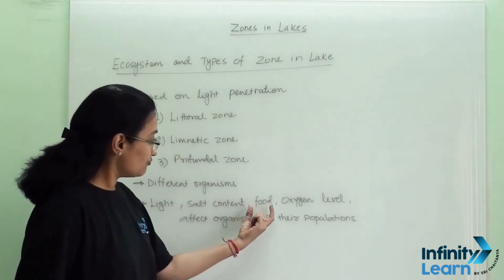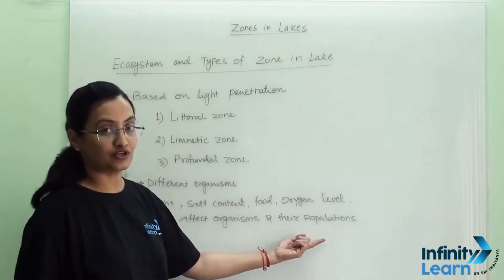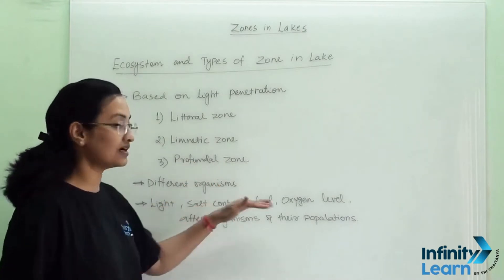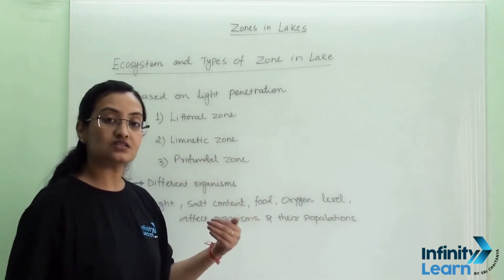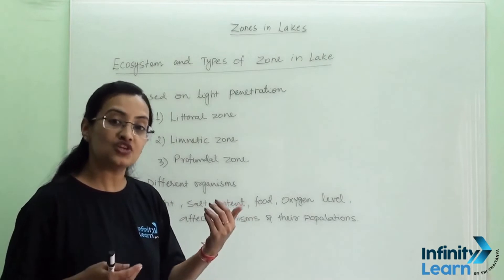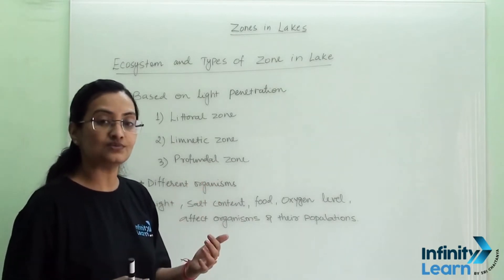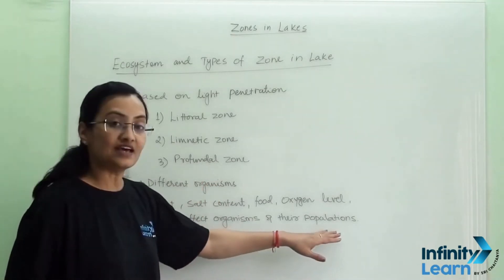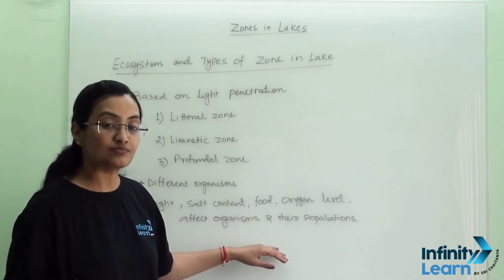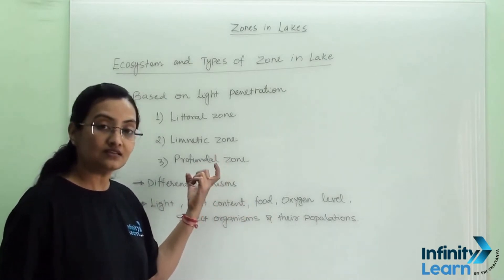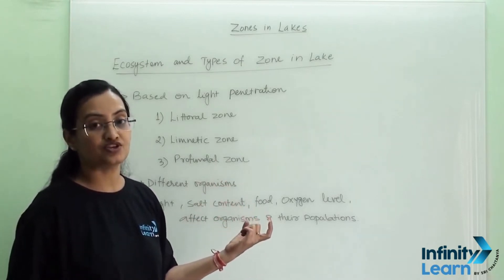Light, salt content, food, and oxygen level all affect the organisms and their population. As the zone varies, all these factors vary. Organisms need to depend on these conditions and adapt changes in their bodies to survive in different zones. If circumstances are favorable, their population will increase. If the situation is not favorable or they cannot adapt, these factors may affect them adversely and their population may decrease.